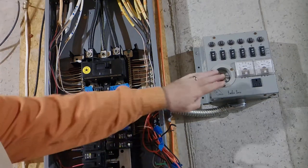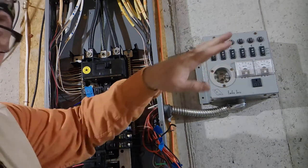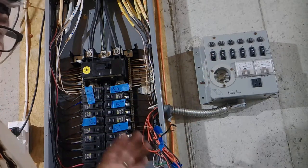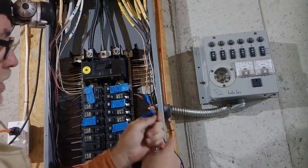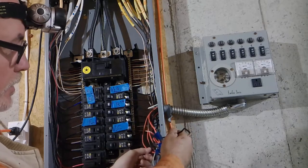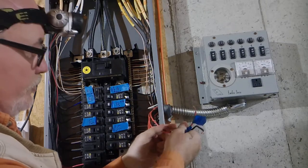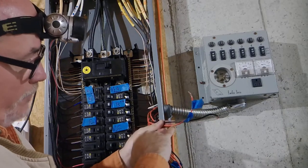Today we're going to wire up this transfer switch. Very simple procedure to do. A couple things you've got to realize. You've got red and black wires. You've got to match up your wires. On these transfer switches, usually the wires are labeled.